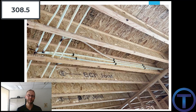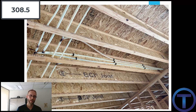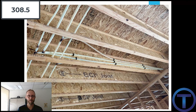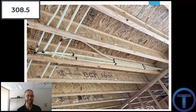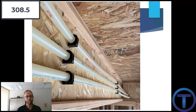When drilling and running through joists perpendicularly, every joist serves as a support. However, when running parallel between the joists, you need additional support. For PEX tubing running parallel between joists, supports are required every 32 inches.